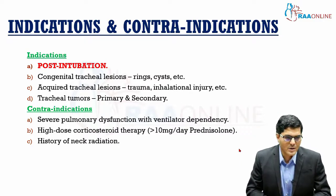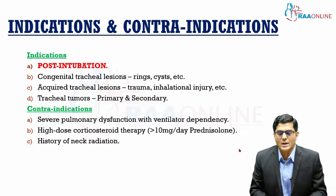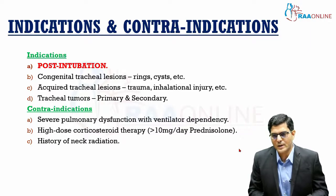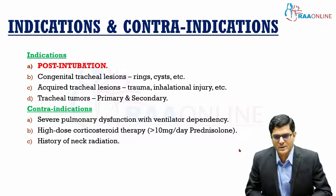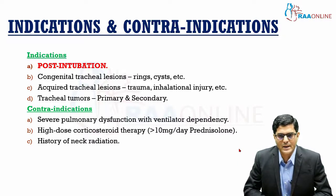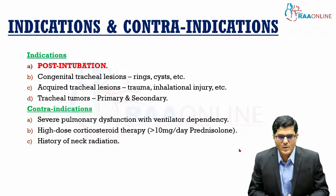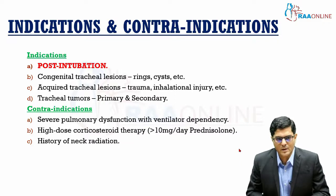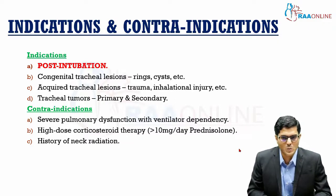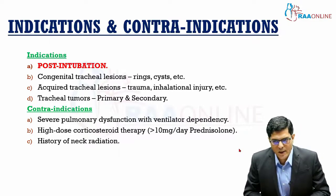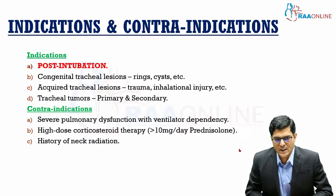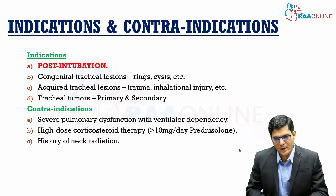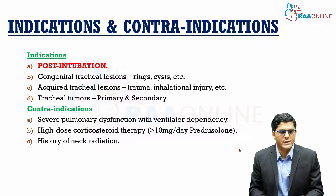Contraindications for TRR: the first is severe pulmonary dysfunction with ventilator dependency, because the goal of surgery is to extubate the patient as soon as possible to avoid stress on the anastomotic suture line — patients who cannot be extubated risk anastomotic dehiscence. High-dose corticosteroid therapy — more than 10 mg per day of prednisolone — interferes with wound healing and increases susceptibility to anastomotic dehiscence. History of neck radiation, diabetes, and any microvascular disease also interfere with healing at the anastomotic site and are therefore relative contraindications.